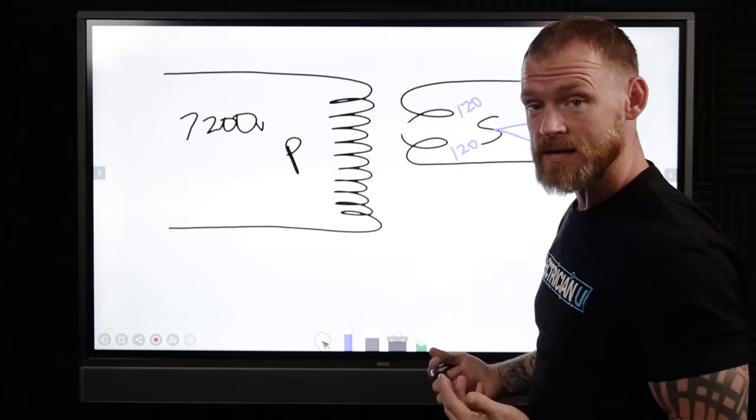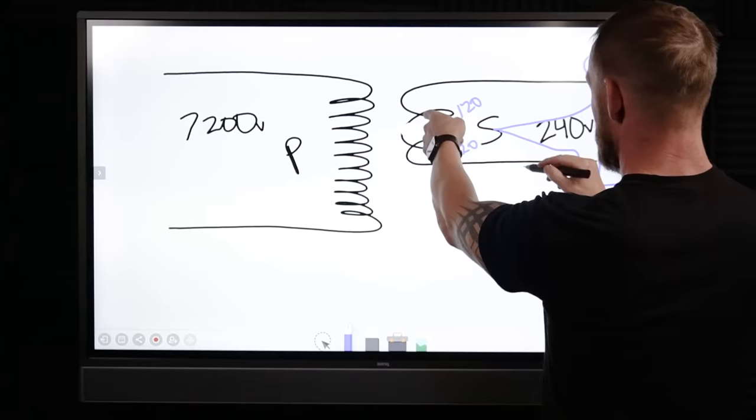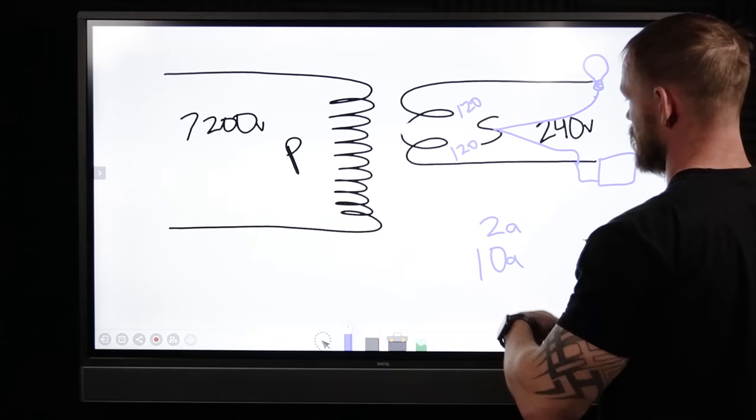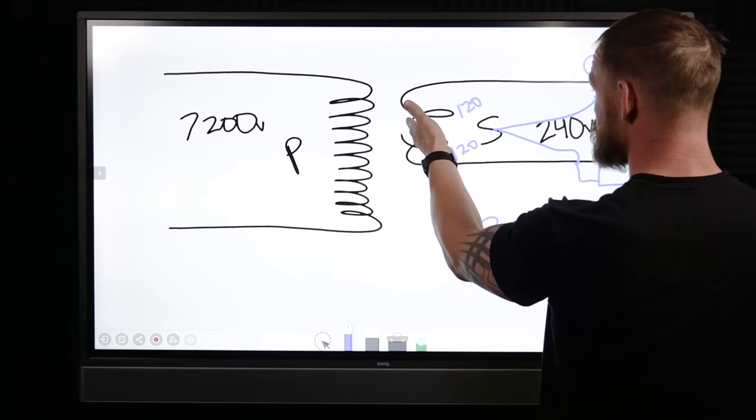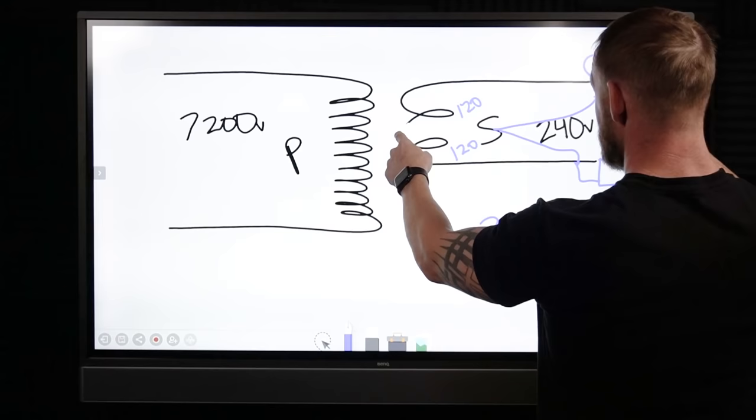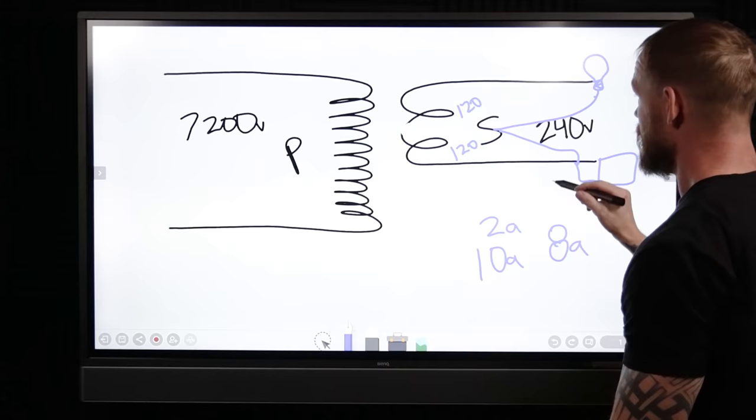So if our light bulb had like two amps flowing on this 120-volt side through the light bulb, but we've got 10 amps flowing through this circuit going through the microwave, then we have an imbalance that's happening. So the neutral is always going to carry whatever that imbalance is. We have to subtract those things, so we would end up having eight amps of current traveling on that neutral conductor.